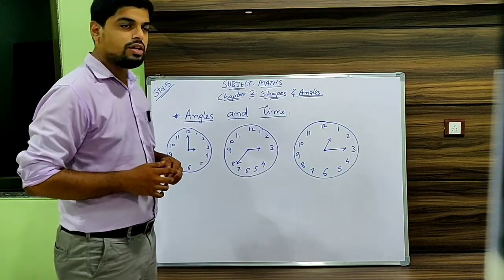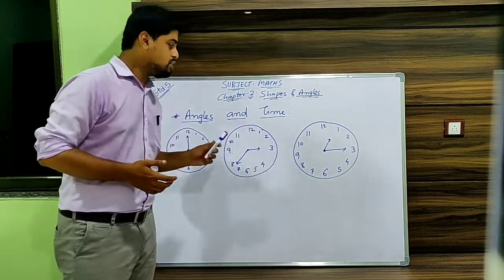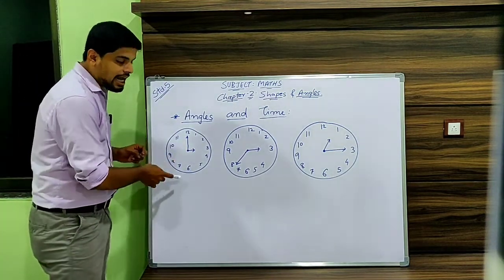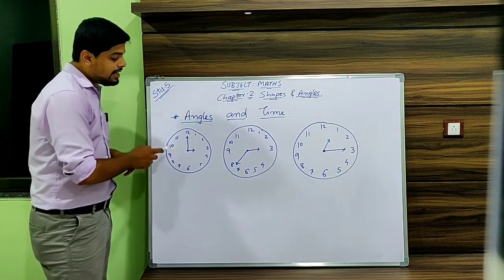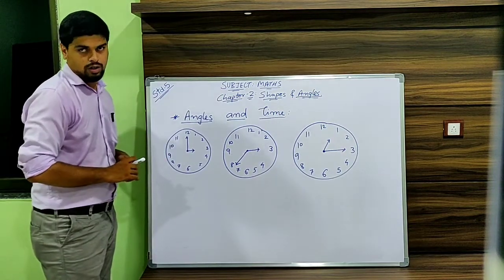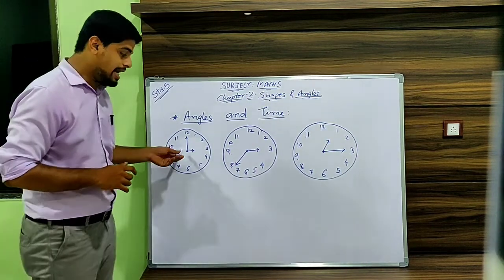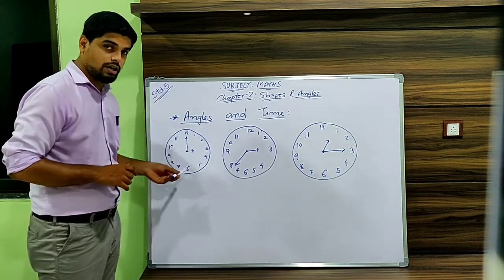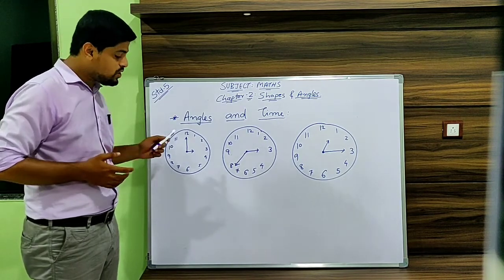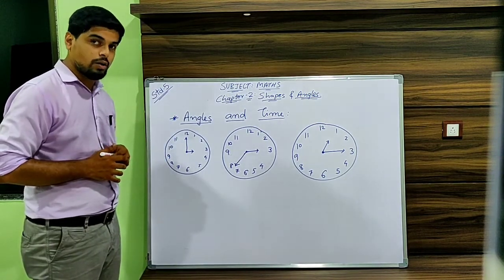The next topic is angles and time. Based on this topic, you might have questions like: write the time and write the angle made by the hands of the clock. So you might be given a clock and asked to write the time and identify the angle made by the hands.